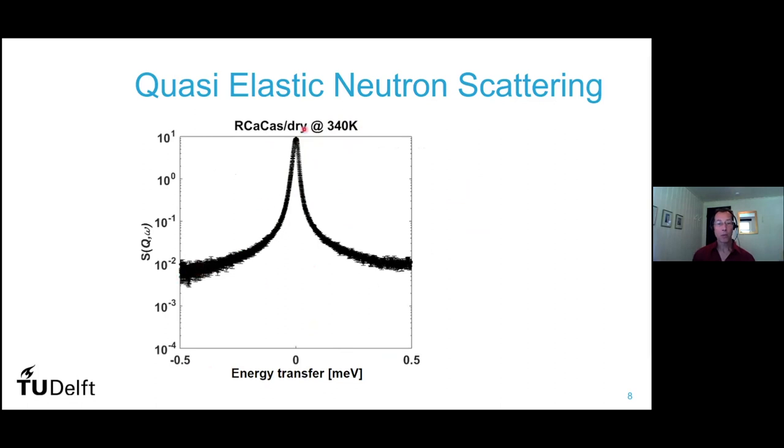Now, if you look at this peak, most of the scattering is elastic, but you see these wings. And in the wings is the information about the mobility of the protein.